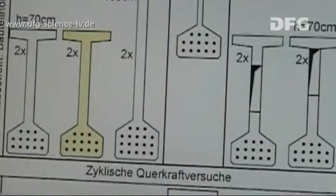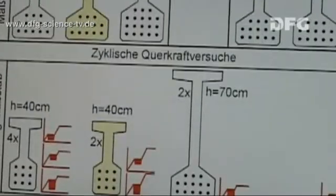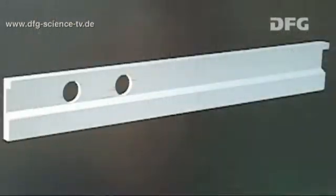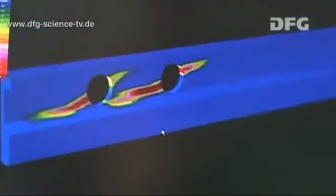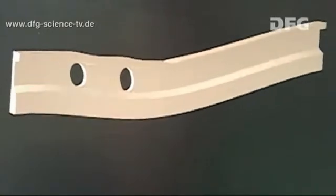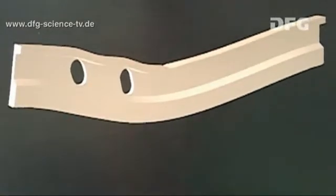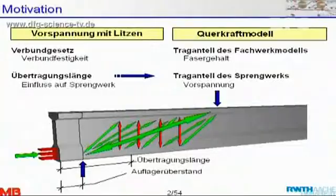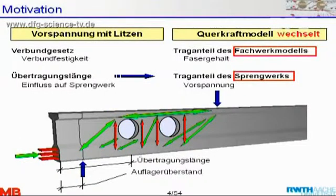For this reason, very specific tests of individual experimental parameters are conducted as part of a larger experimental matrix. The findings from these tests can then be used in computational models, which allow other experimental parameters to be varied without the need to perform expensive real-life tests. These experimental parameters may be the position of holes in beams, for example, or the variation of the cross-section.